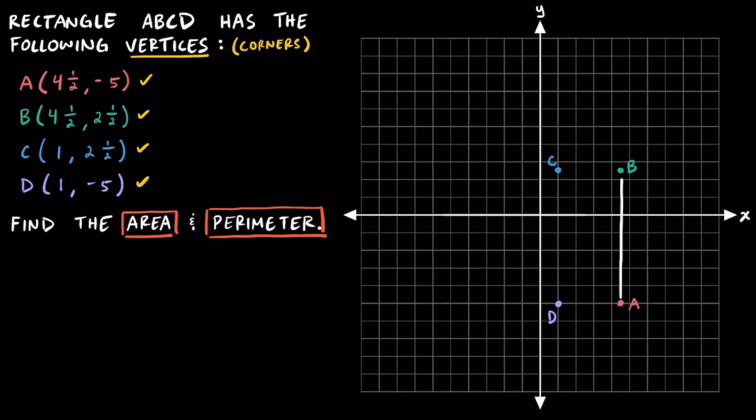Connecting point A to point B, point B to point C, and point C to point D, you can see that we do indeed have a rectangle.